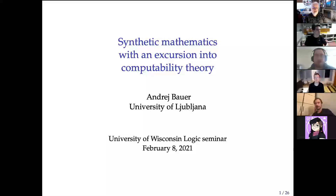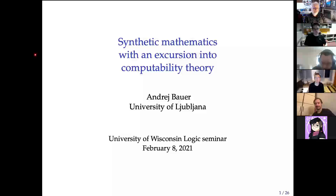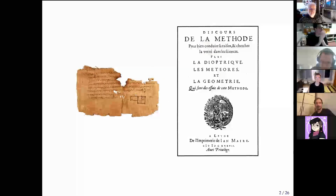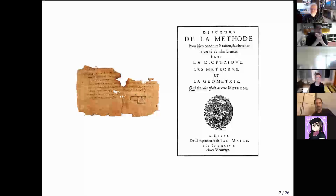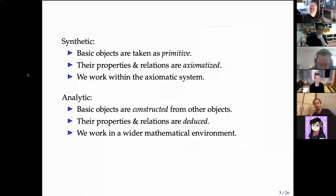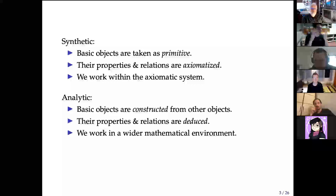Today I'd like to speak about synthetic mathematics. The first thing to do is explain the words. It is often said that Euclid's geometry is synthetic but Descartes' Cartesian geometry is analytic. So what do we understand when we say these words — synthetic and analytic?